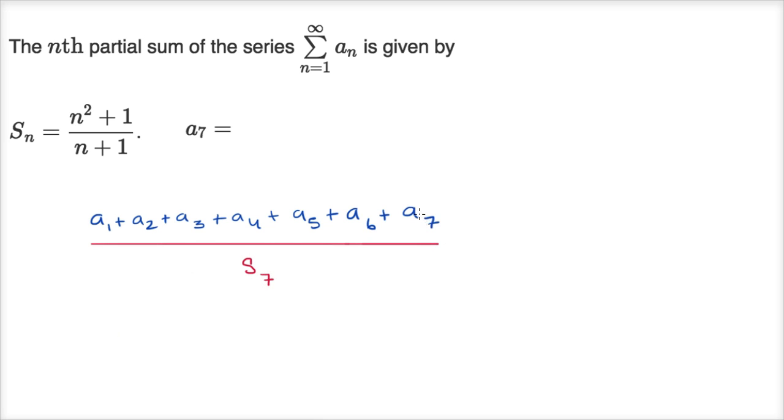And if I wanted to figure out a sub seven, I could subtract from that, I could subtract out the sum of the first six terms. I could subtract out S sub six. So once again, what am I doing here, what is my strategy?